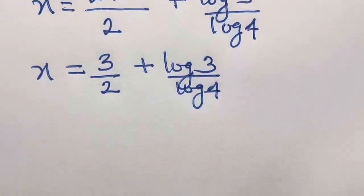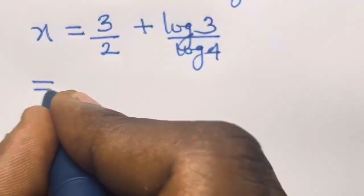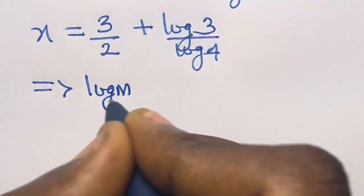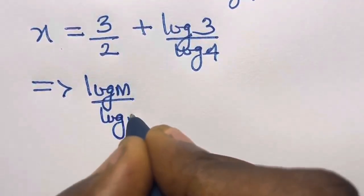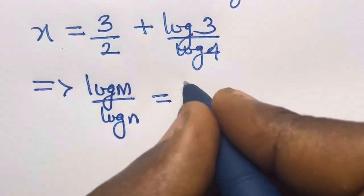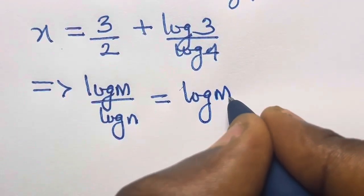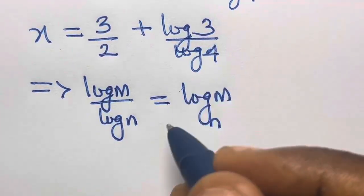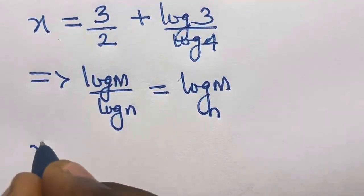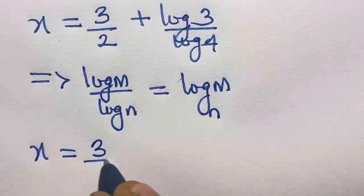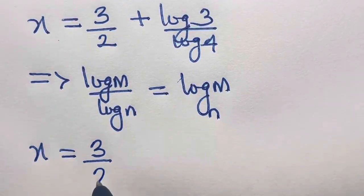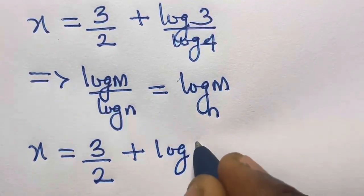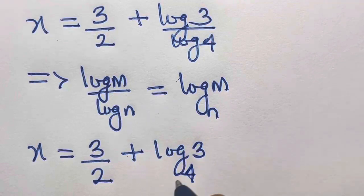From the law of logarithms, log M divided by log N equals log M base N. Applying this, we have x equals 3/2 plus log₄3. So this is our answer.